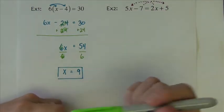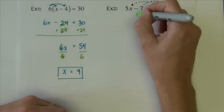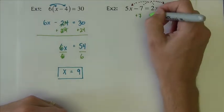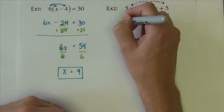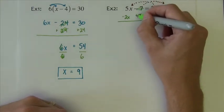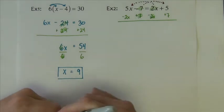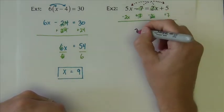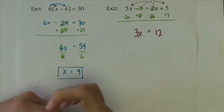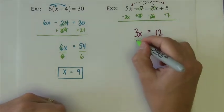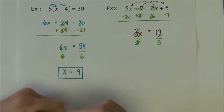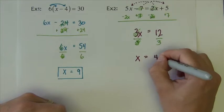I'm going to add 7 to both sides. I'm going to subtract 2x from both sides. So the 2x's cancel. The 7's cancel. And now we can combine our like terms. 5x minus 2x makes 3x. 5 plus 7 makes 12. And now we finish this by dividing by the 3. So we end up with x equals 4.